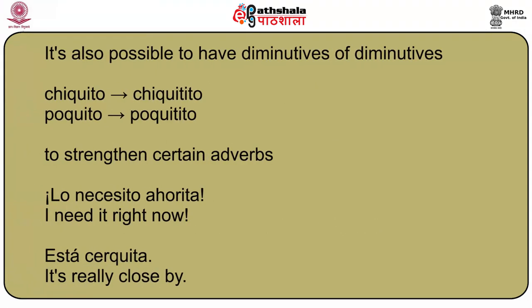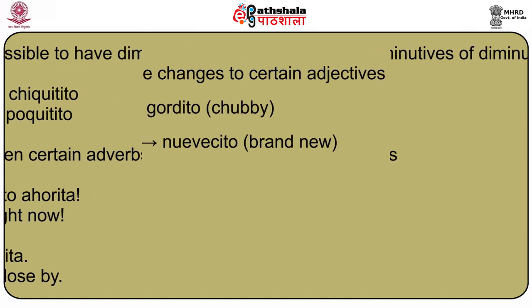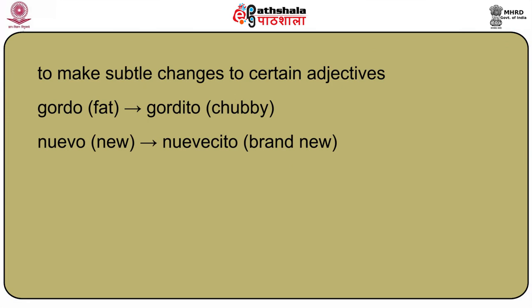It is also possible to have diminutives of diminutives: chiquito becomes chiquitito; poquito becomes poquitito. We are not limited to nouns — we can also use diminutives to strengthen certain adverbs: Lo necesito ahorita — I need it right now; Está cerquita — It's really close by. And to make subtle changes to certain adjectives: gordo (fat) becomes gordito (chubby — a nicer, complimentary way to say it). Nuevo becomes nuevecito, meaning brand new: Es un coche nuevecito — It's a brand new car.